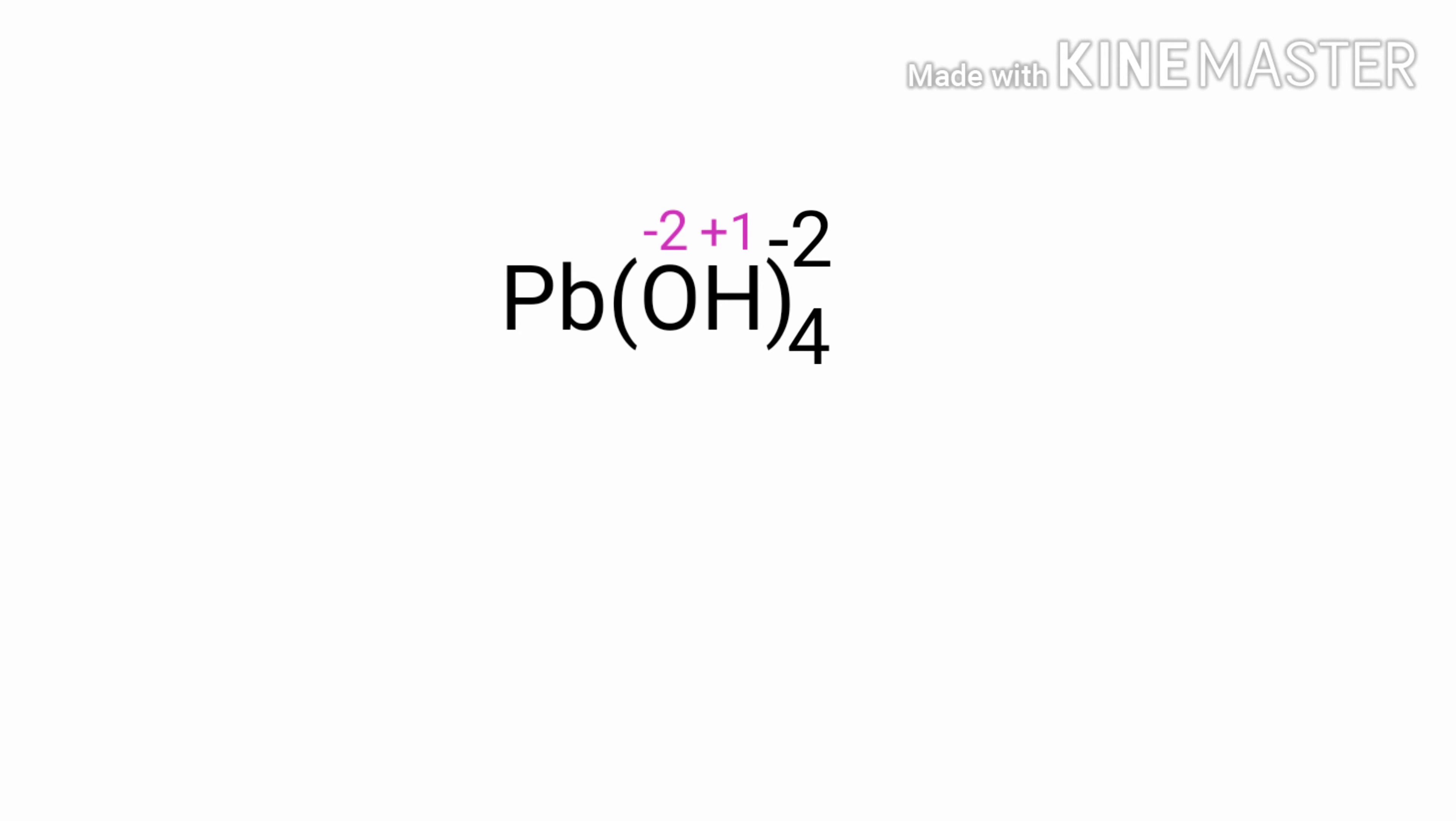As per the rule of assigning oxidation numbers, the sum of the oxidation numbers in a polyatomic ion is equal to the charge of the ion. In this ion, the sum of the oxidation numbers of oxygen and hydrogen atoms is equal to minus 4.